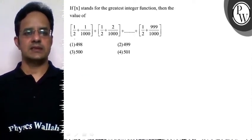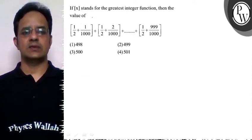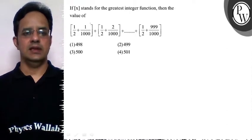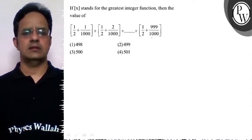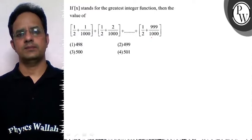Hello, the problem is that if bracket x stands for the greatest integer function, then the value of half plus one by thousand greatest integer plus the greatest integer of half plus two by thousand till half plus 999 upon thousand.